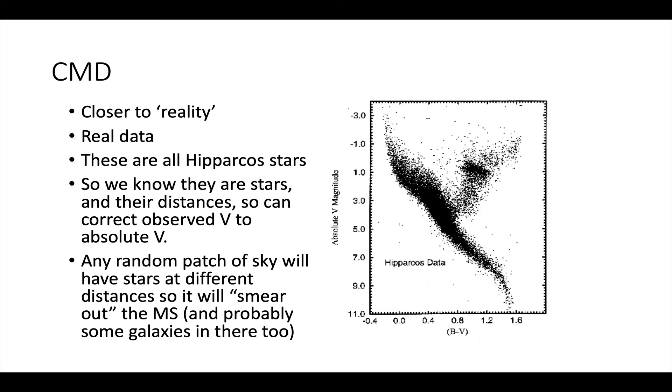You can see that you've got a main sequence and you've got a giant branch. There's a couple of white dwarfs down there, but there's also scatter in there. There's stars that it doesn't make any sense why stars would be here or even down here. And then there's a finite width to the main sequence as well. If you pick any random chunk of sky, you're going to have stars at a variety of distances, so that's also going to smear out the main sequence. And if you just pick a random chunk of sky, you're going to have galaxies in there too.